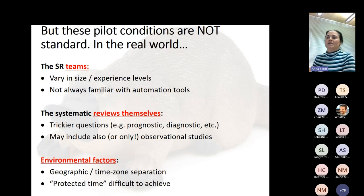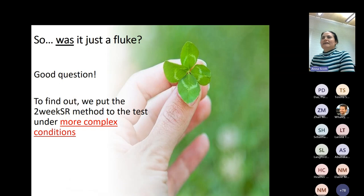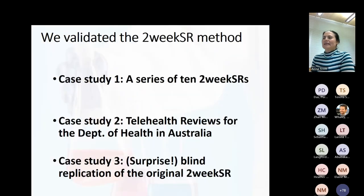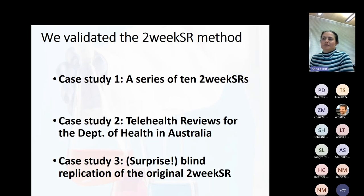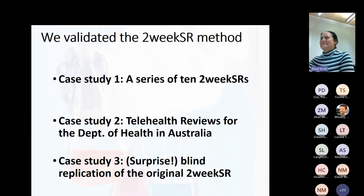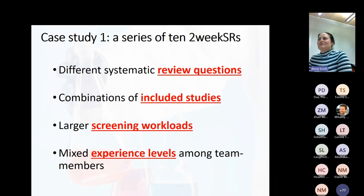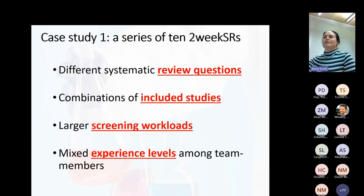So what would it look like? We decided to find out. We validated the method in three different ways: first, a case study series of 10 systematic reviews done using the two-week SR method; second, a series of reviews we did for the Department of Health in Australia; and third, a surprise blind replication. For the series, we pushed on different question types, types of included studies, larger screening workloads, and mixed levels of experience.